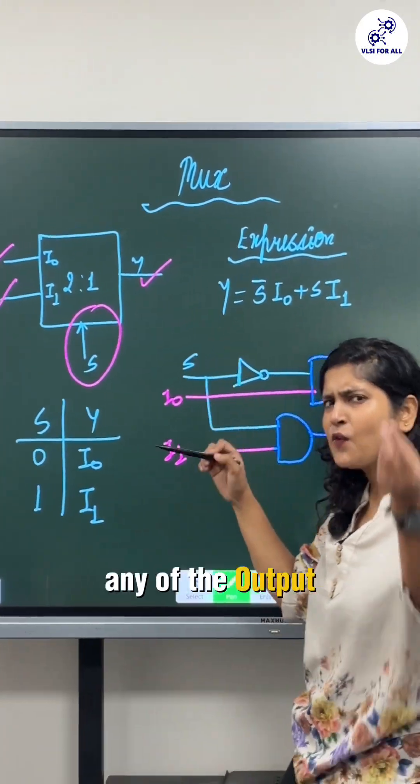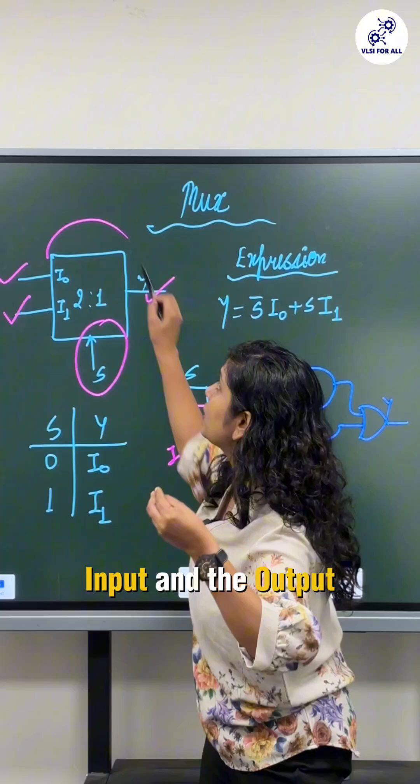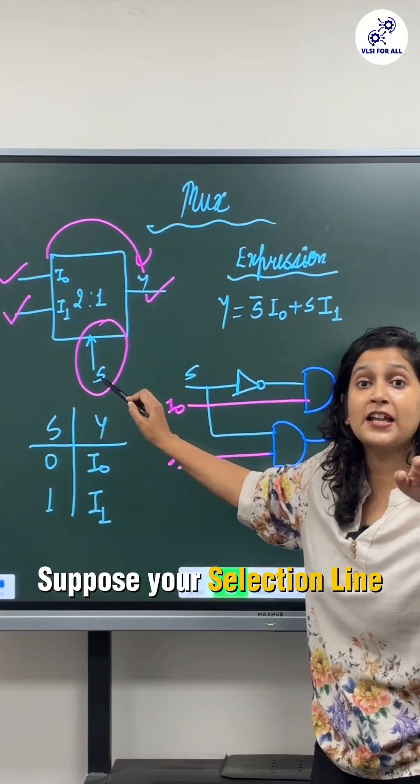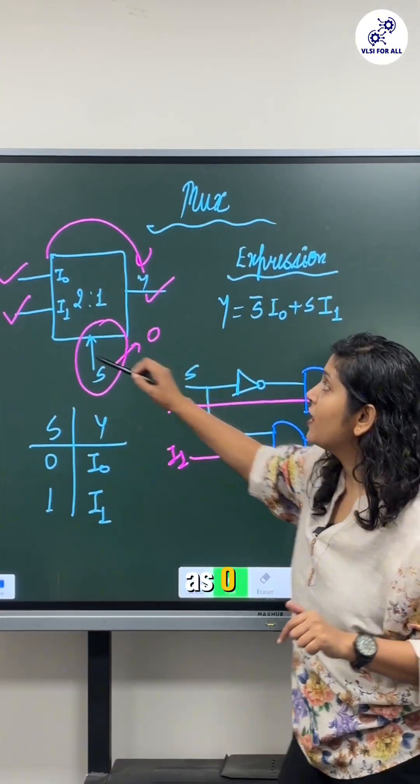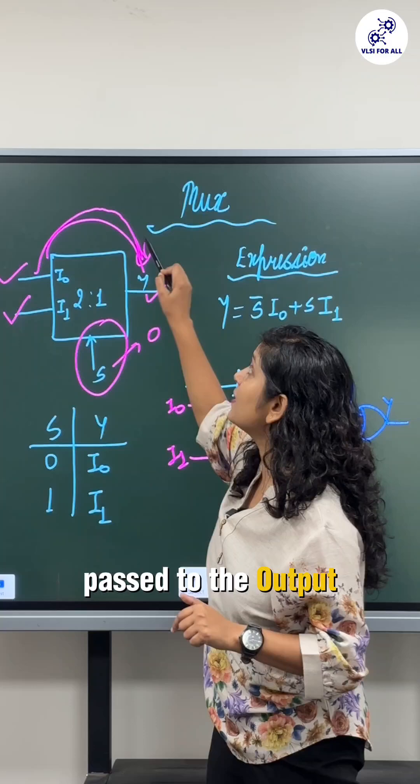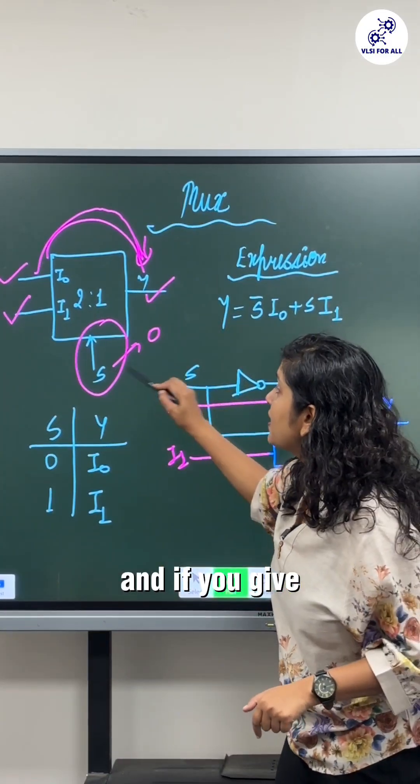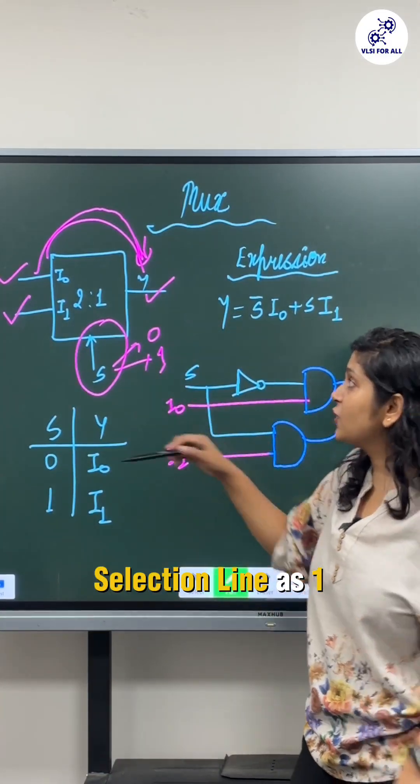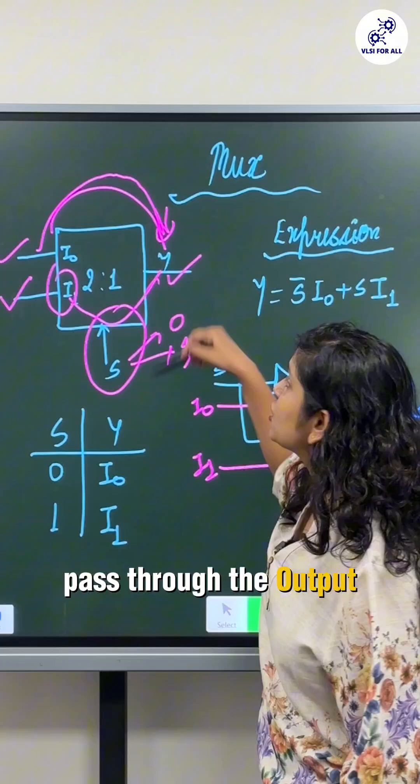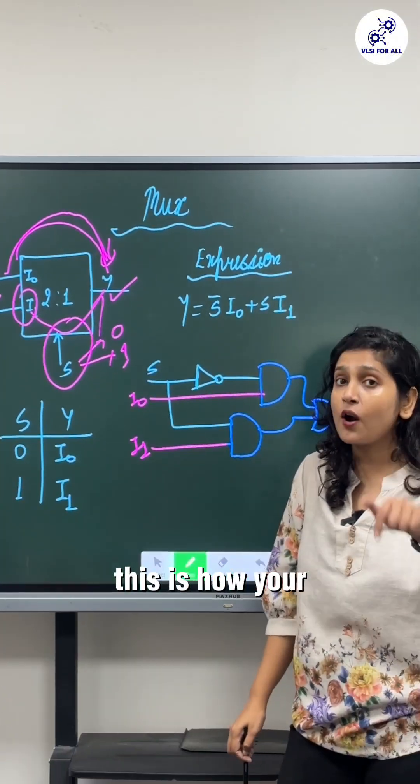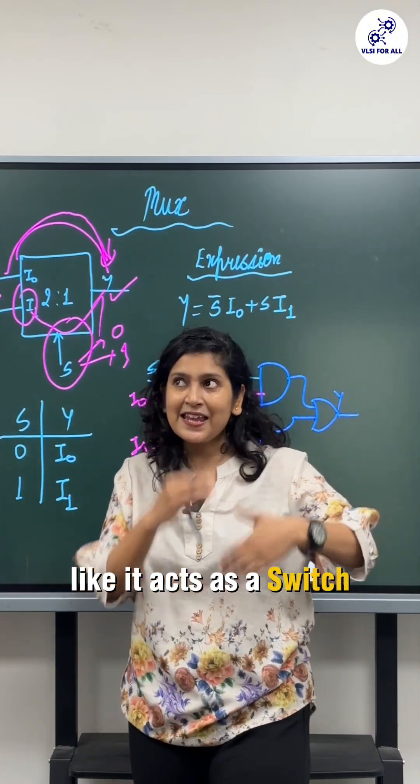Suppose your selection line you have given the input as zero, this I0 node will get passed to the output. And if you give selection line as one, your I1 will pass through the output. This is how your multiplexer acts like. It acts as a switch.